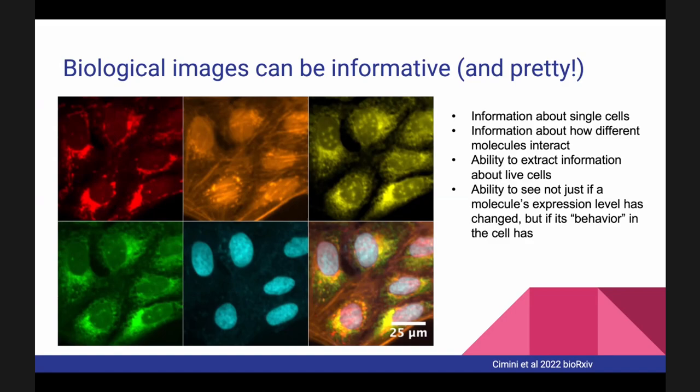We can see information about individual molecules — not just how much of them there is, but where they are, what they're doing, and whether they're interacting with other molecules. We can see this on a cell-by-cell basis, getting really detailed information about the heterogeneity in an individual biological sample. That's the position we're starting from: these images can teach us something about biology.